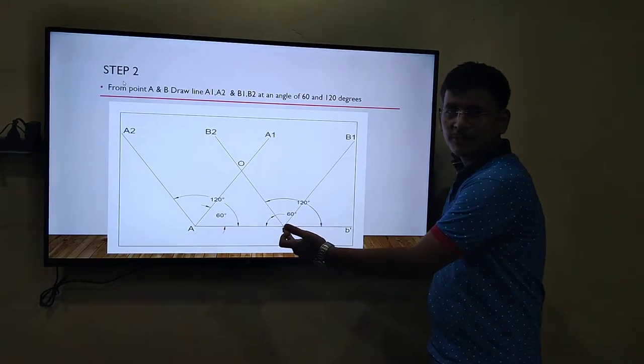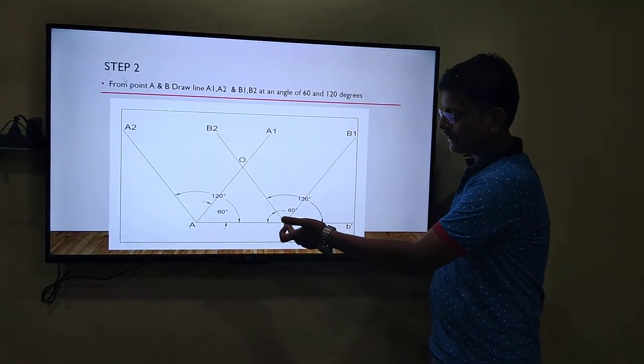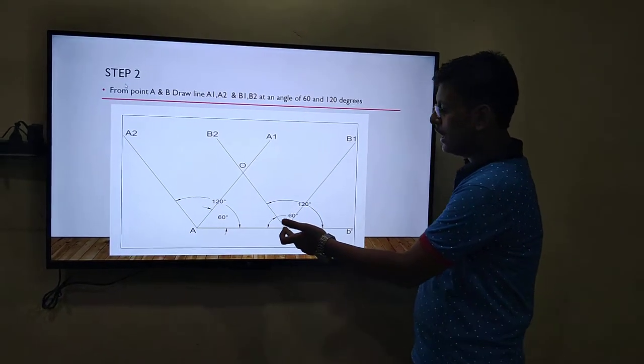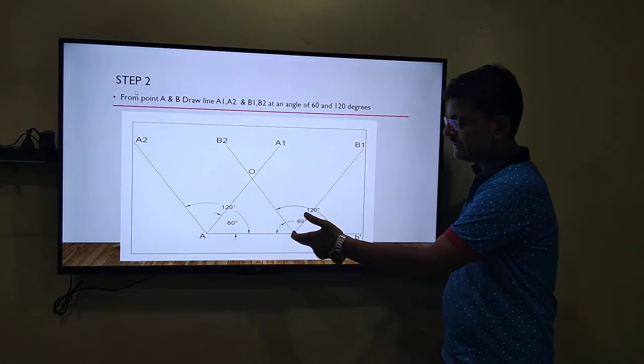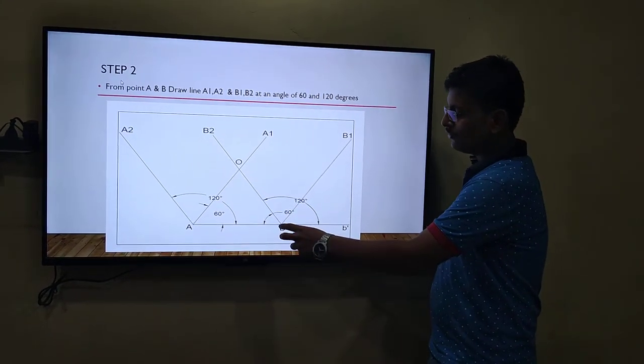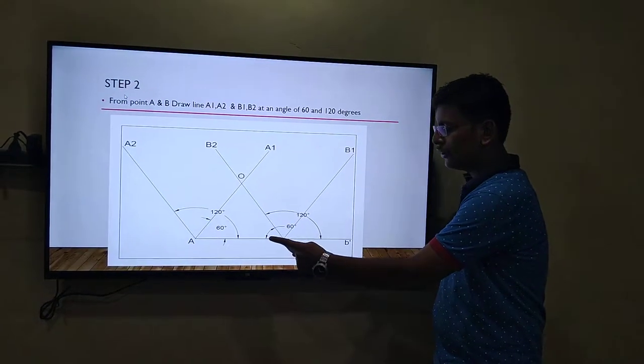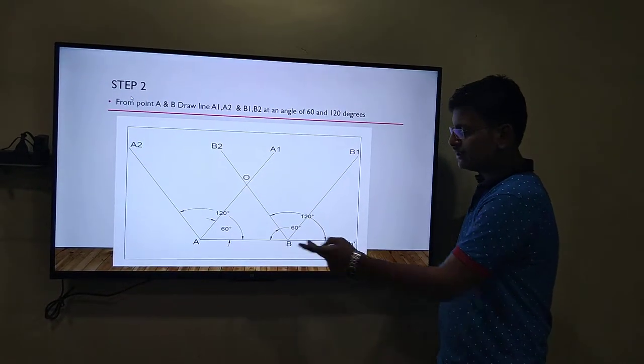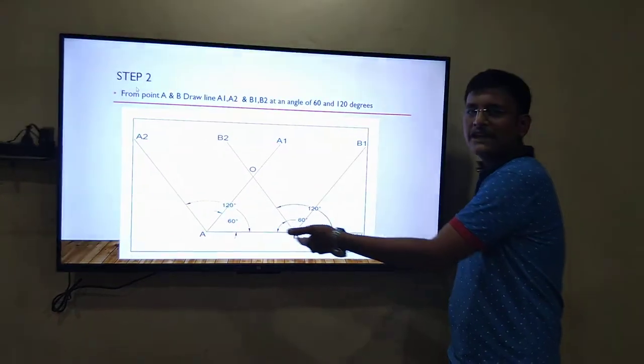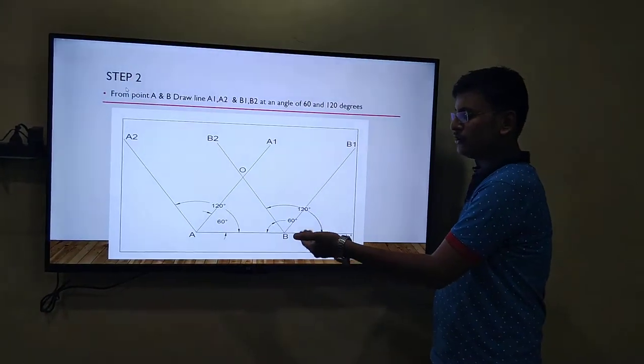You will do the same over here. Keep the protractor on point B. Mark 60 degree and 120 degree. For marking 60 degree, you will have to extend the line from point B up to B'. So, you will get a horizontal line over here to keep the protractor aligned.